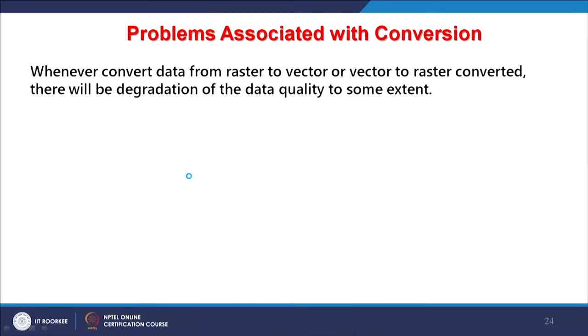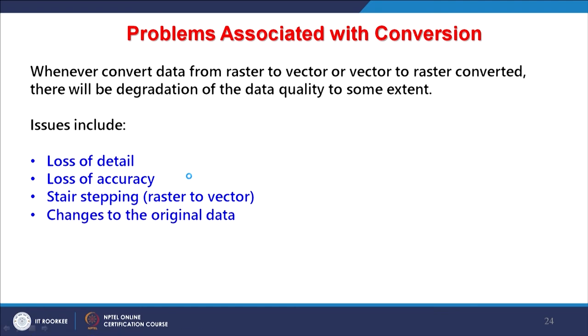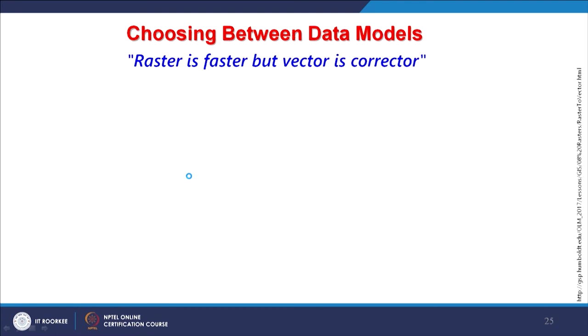To summarize the conversion problems: whenever you convert from one format to another, there will be degradation of data quality. Issues include loss of detail, loss of accuracy, stair-step effects from raster to vector, and changes to the original data.